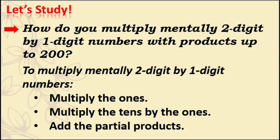Let's study. How do you multiply mentally two-digit by one-digit numbers with products up to 200? To multiply mentally, first, multiply the ones. Then multiply the tens by the ones. And finally, add the partial products.